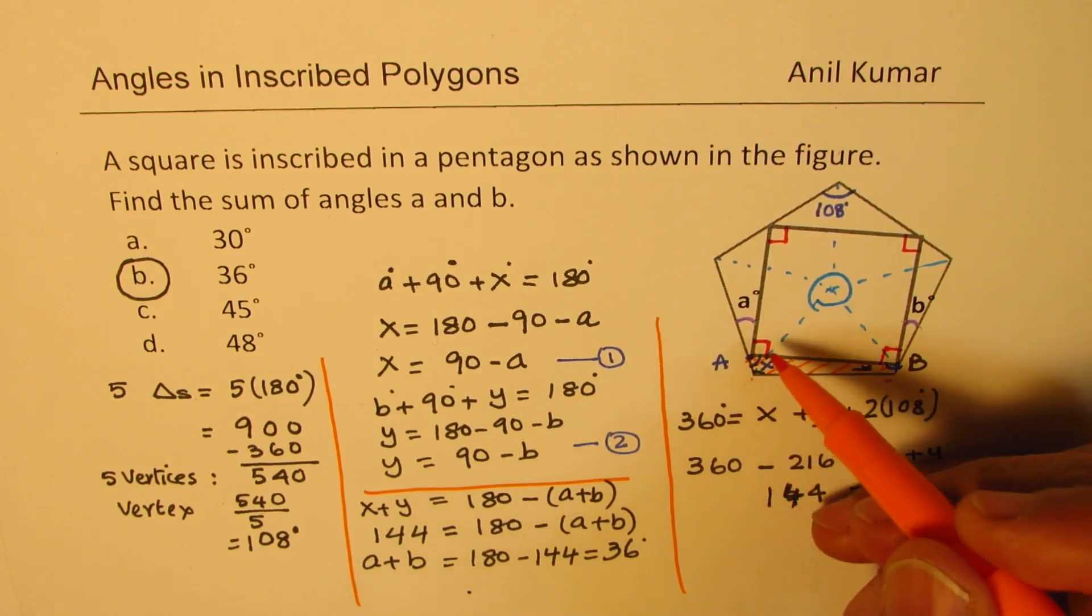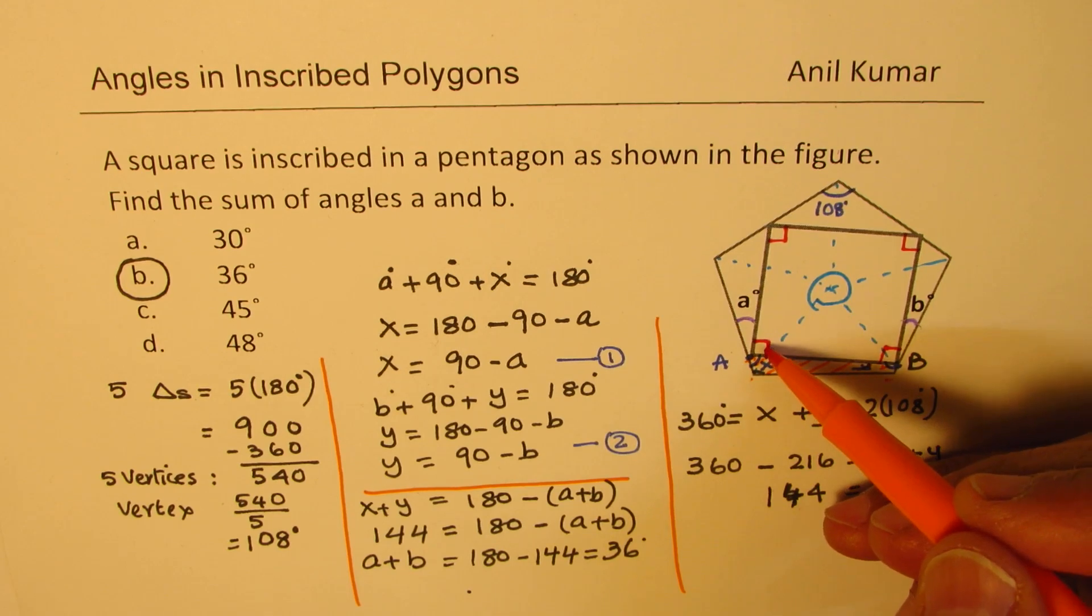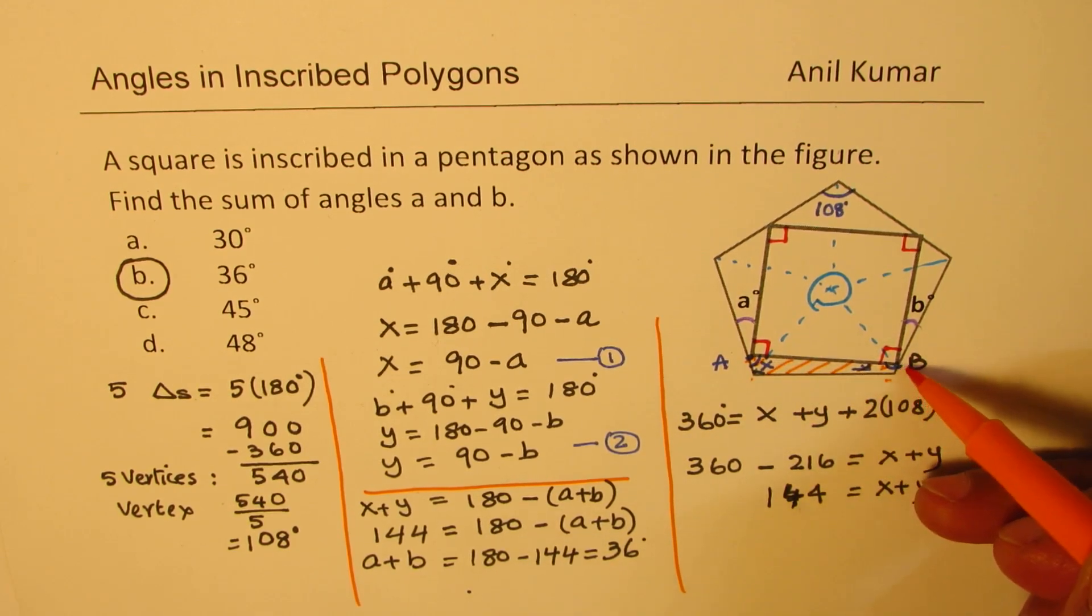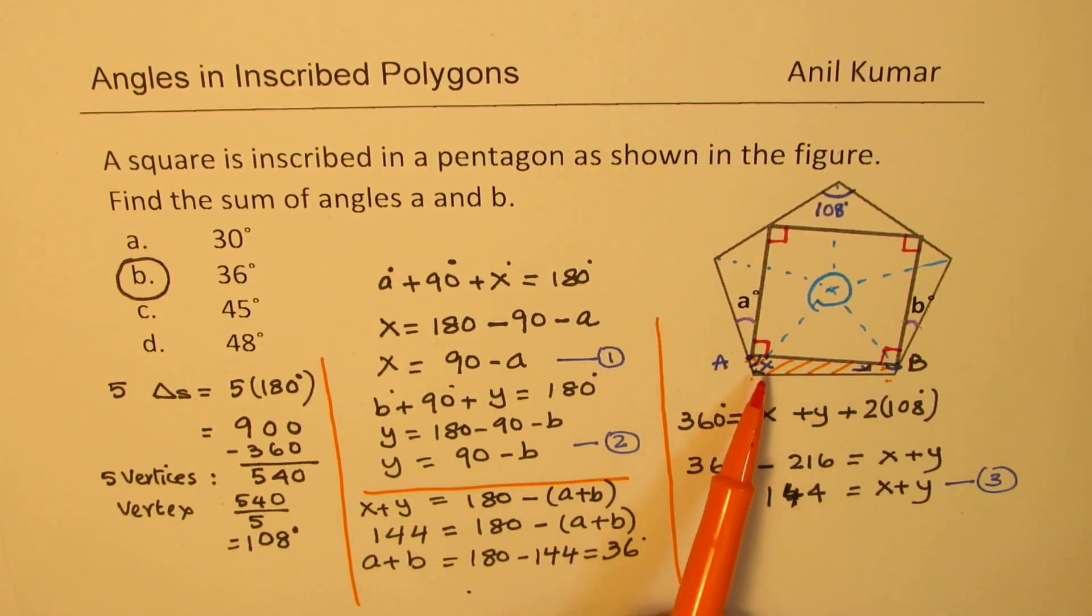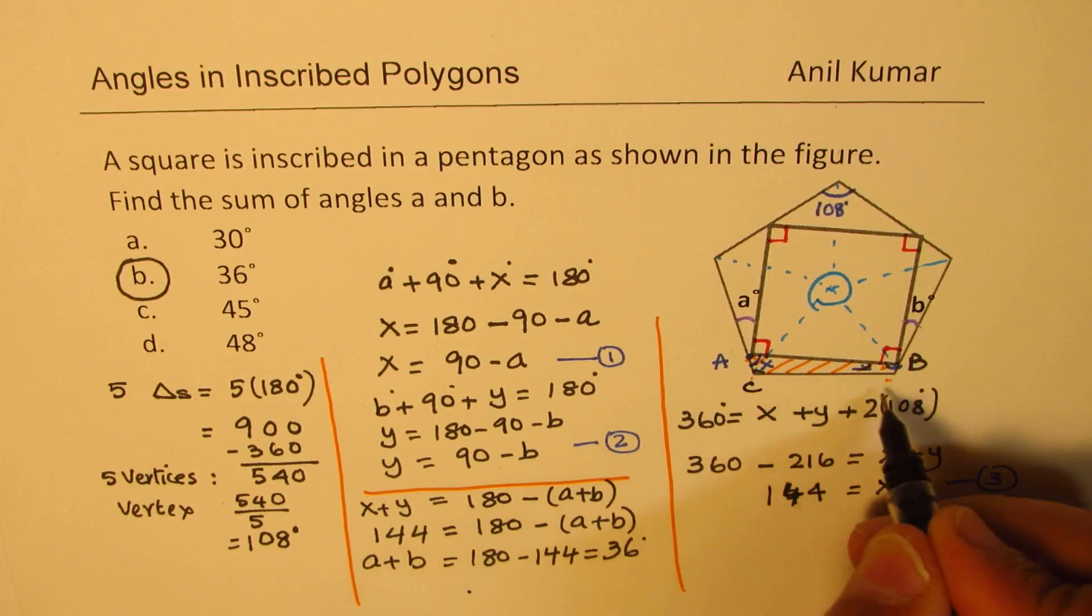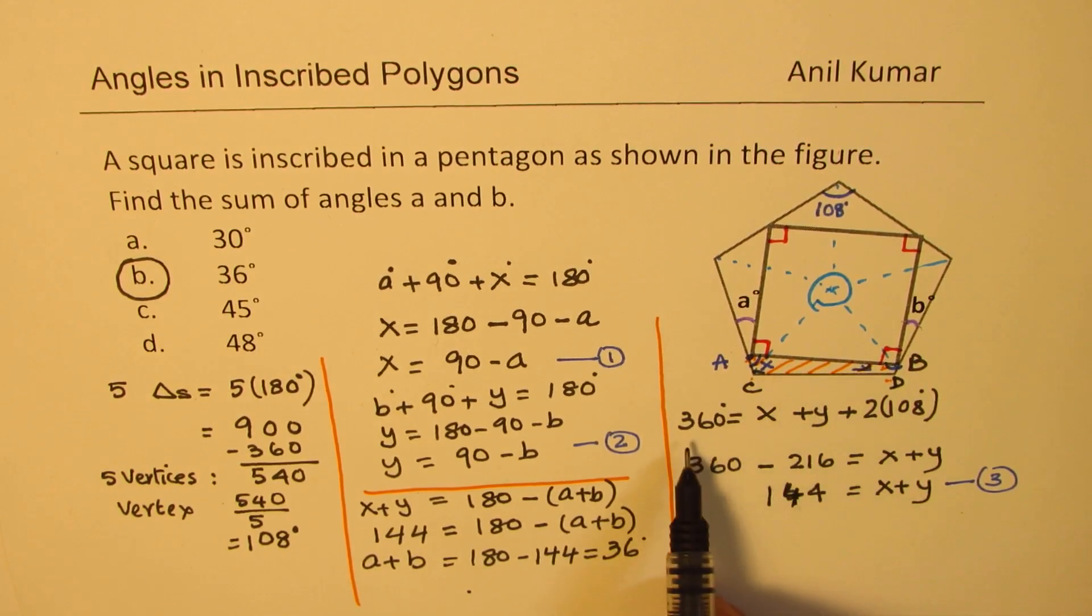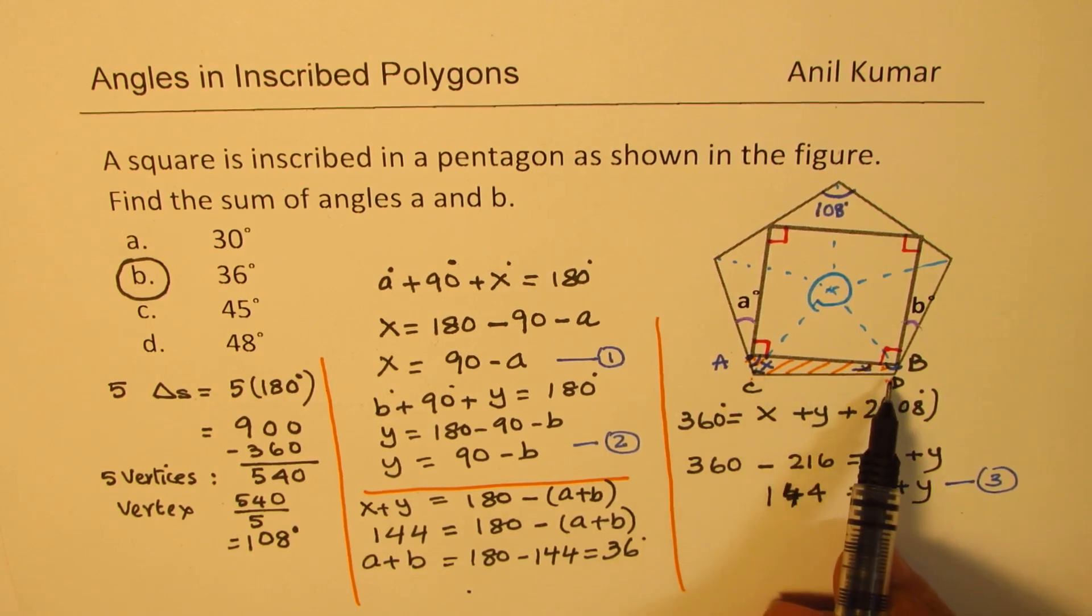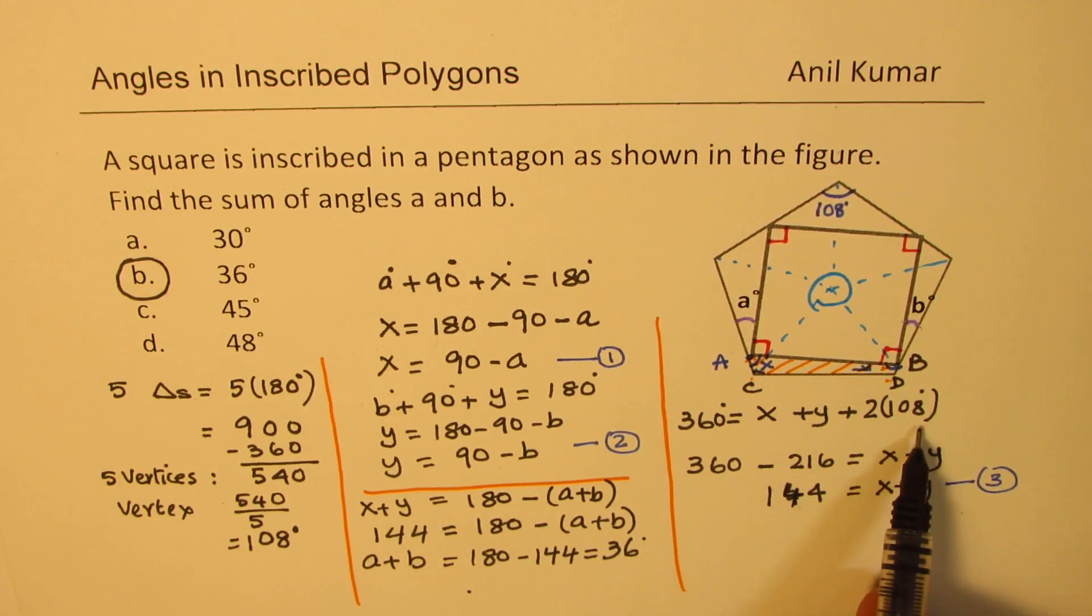So you could start with A, taking this as a straight line. Sum of angle A, 90, and X is 180 degrees. Similarly, for the point B, sum of angles B, 90, and Y is also 180 degrees. So that relates X and Y with 90 minus A and 90 minus B. In the quadrilateral, we can say the sum of angles should be 360 degrees. So that is X plus Y plus 2 times 108. Since the interior angles are 108 for a pentagon, we get our equation X plus Y is 144. Now equating these two, we get our solution that A plus B should equal 36 degrees. Is that clear? So that is how we can actually solve this question.